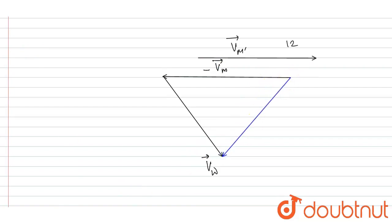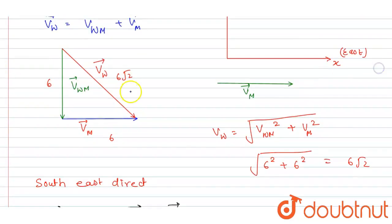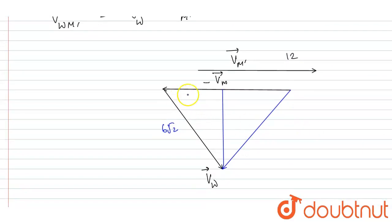Drawing a line joining the two endpoints gives the resultant. We already know from the first part that the wind speed was six root two and the man's original velocity was six, with a length of six here too.